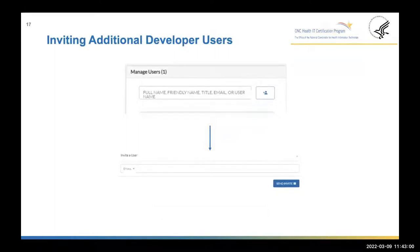Developers who have registered and created an account on CHPL also have the ability to invite additional users. To invite other users, select the blue person icon in the manage user section to add a new developer user to the developer organization. Once you click on that icon, a new module will open for you to enter the email of the new developer user. After entering the email and clicking 'Send Invite,' CHPL will send an email invitation to that new developer user to set up their account.